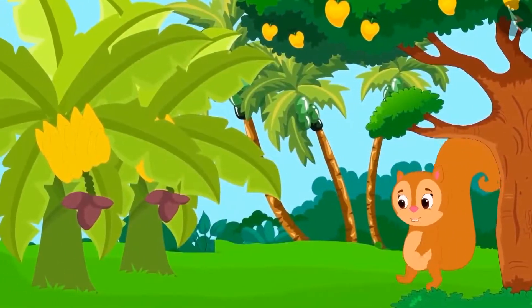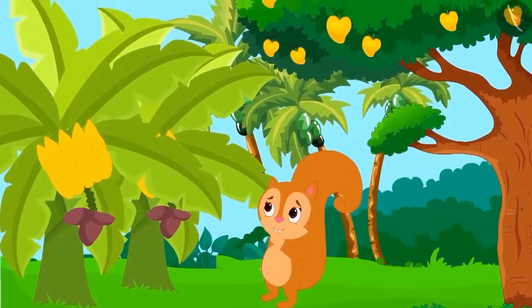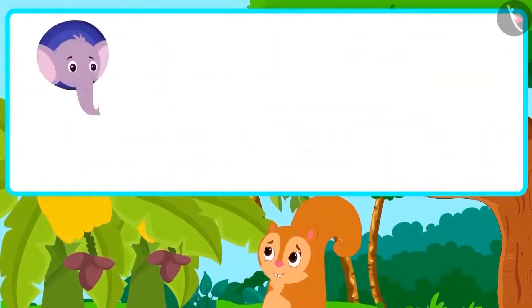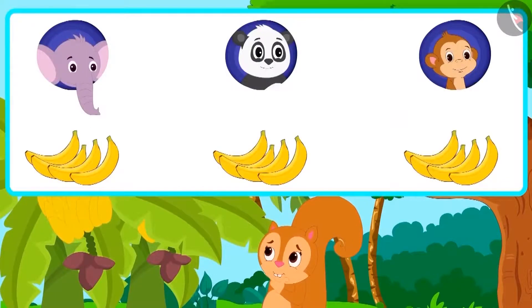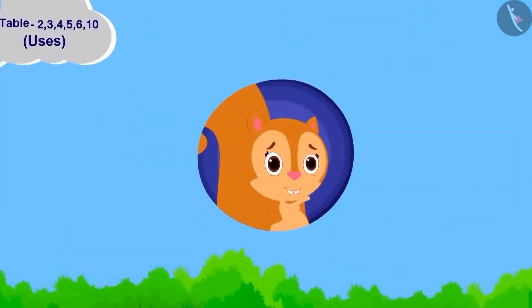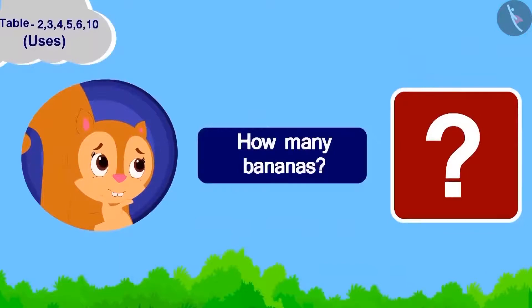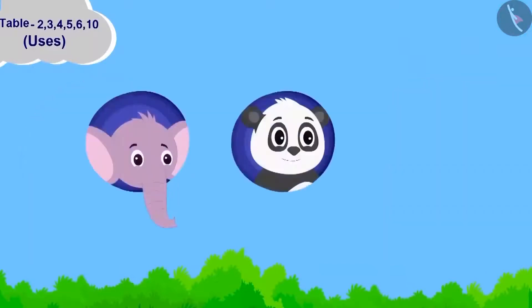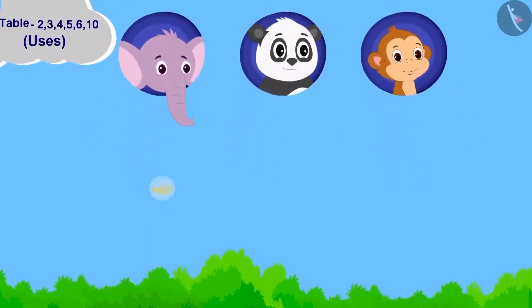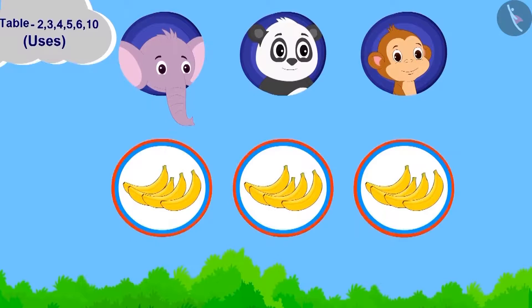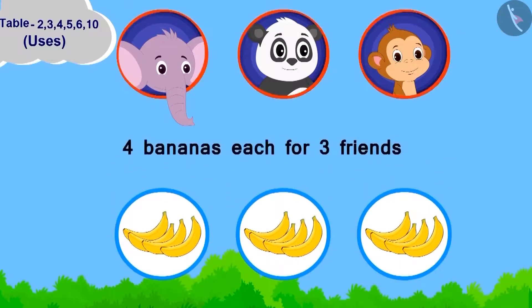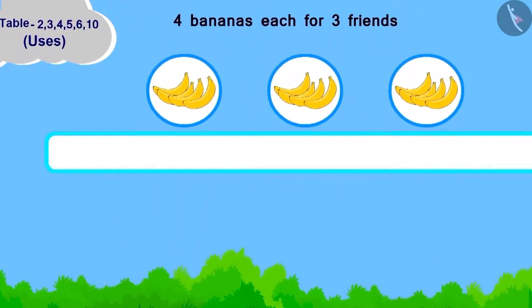One day, a lot of fruits had grown in Chanda's garden. She thought, why not take 4 bananas each for her friends Appu, Golu and Baban. Children, can you tell how many bananas should Chanda take? Appu, Golu and Baban are how many friends in total? 3. Now, how many bananas are to be taken for each friend? 4. Chanda has to take 4 bananas each for 3 friends. We can write it like this.